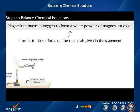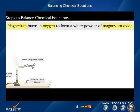In order to do so, focus on the chemicals given in the statement. These are magnesium, oxygen, and magnesium oxide. Write them out with their correct symbols and formulas. So that was the first step of writing chemical equations.